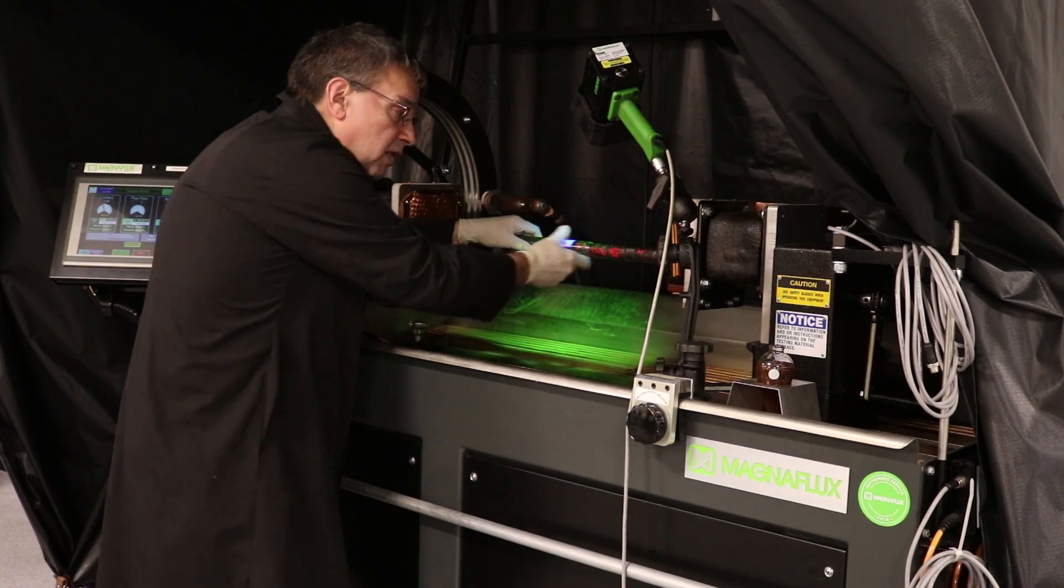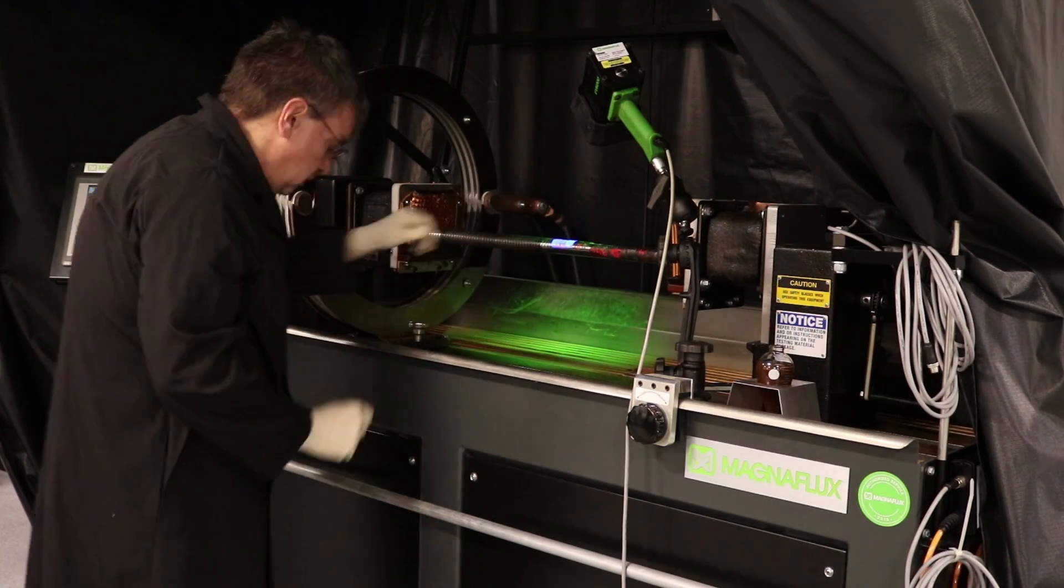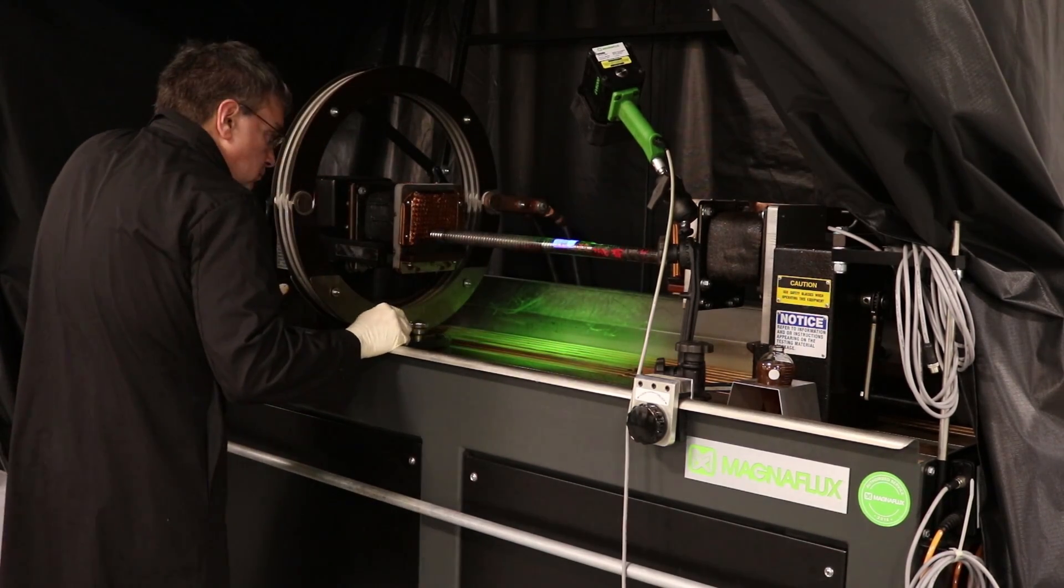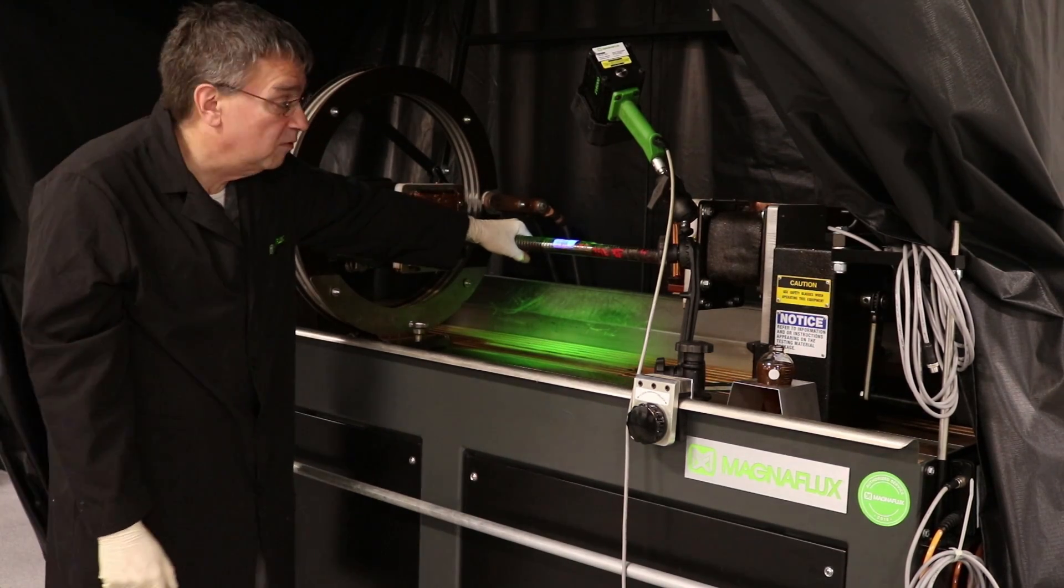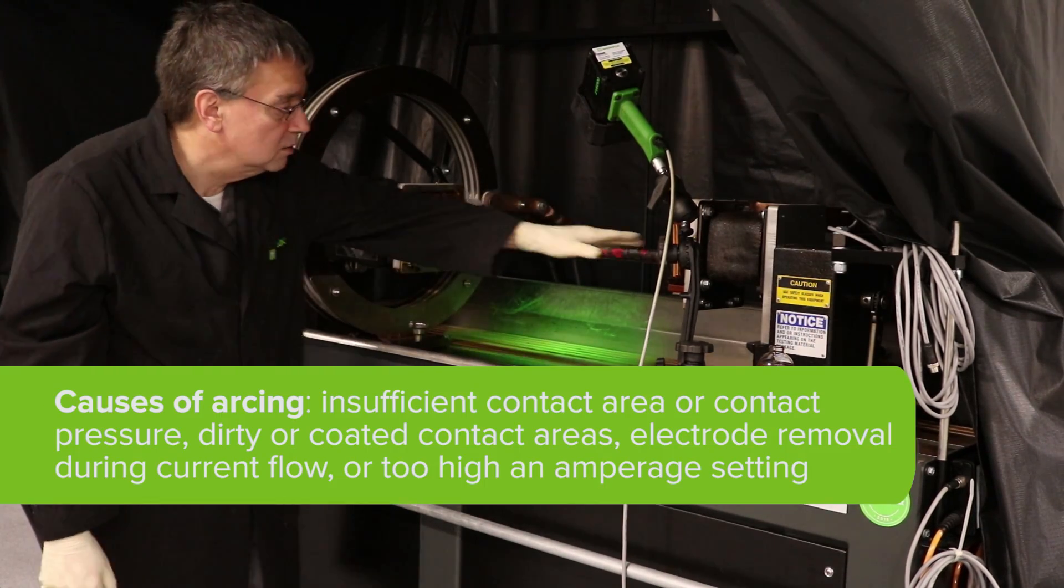We'll place the part between the headstock and tailstock and clamp the part. Ensure that the part cannot be moved. This will prevent arcing between your copper pads and the part itself.